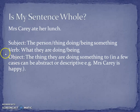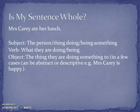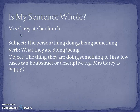And the final ingredient is the object. Mrs. Carey ate her lunch. The object is the thing that the subject is doing something to — in this case, Mrs. Carey is eating her lunch. In somebody ran a race, let's say Bill ran a race, the race would be the object. It is the thing that something is being done to.